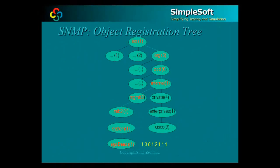The SysDescr node, which is part of the standard RFC 1213 MIB, is shown at the bottom of the diagram as part of a larger object registration tree. Proprietary MIBs defined by companies such as Cisco get defined under the private enterprises node. The path taken from the root of the tree to the specified object determines its object class identifier. In this case, the path from the root at the top of the diagram — ISO to SysDescr — would be 1.3.6.1.2.1.1.1, giving us that value as the object class identifier.